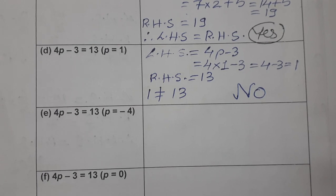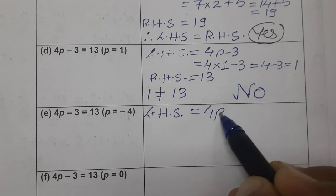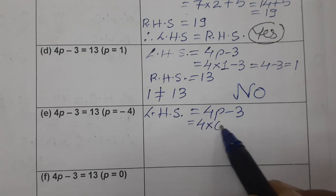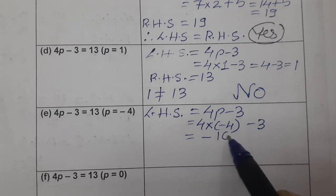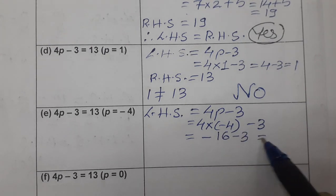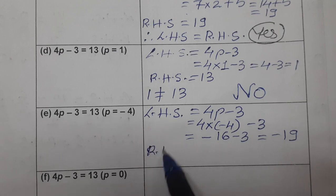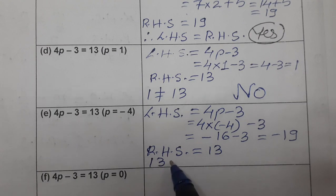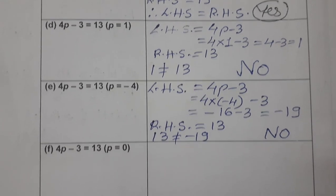Next is part (e). Again the equation is 4p − 3 = 13, this time p = −4. Left hand side: 4 × (−4) − 3 = −16 − 3 = −19. The RHS is 13. Since −19 is not equal to 13, the answer is again no — it is not the solution of the equation.